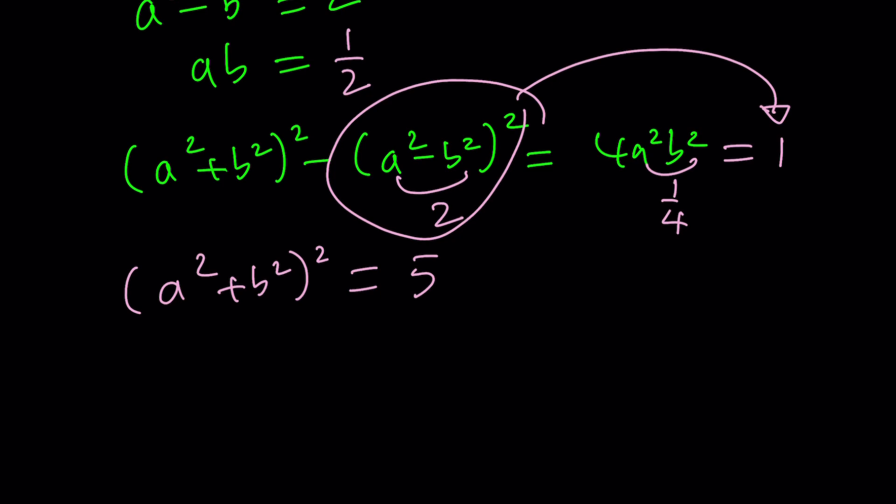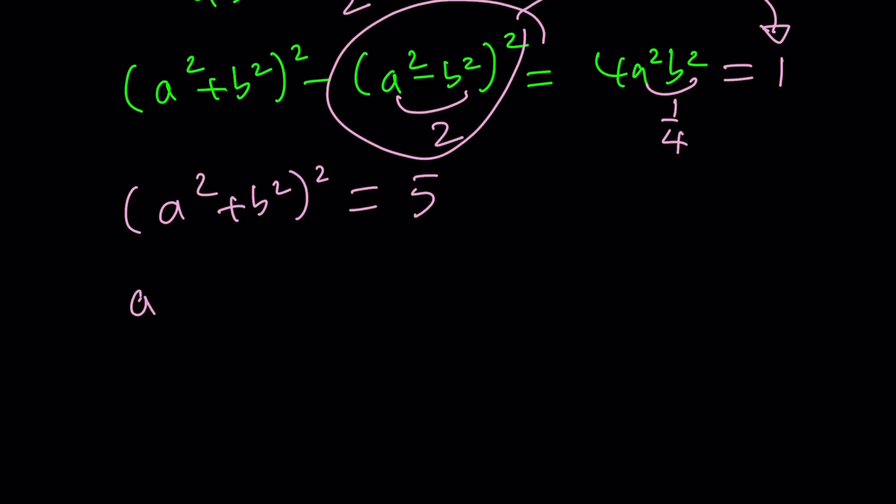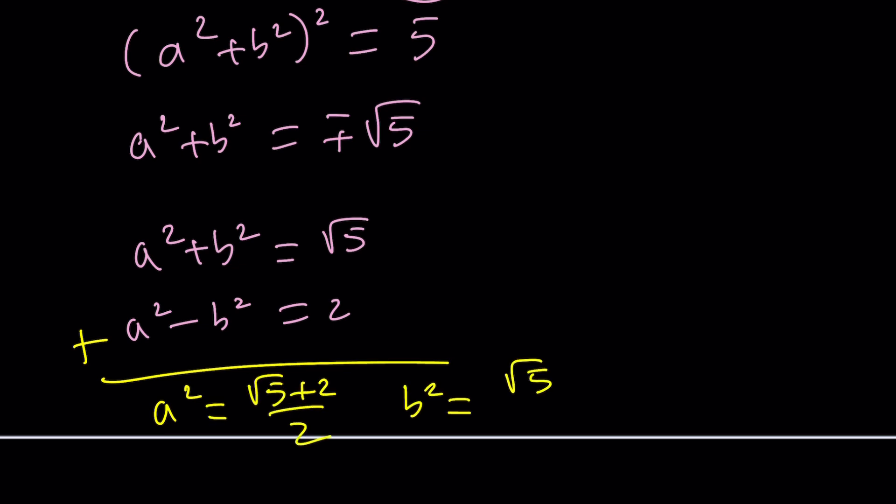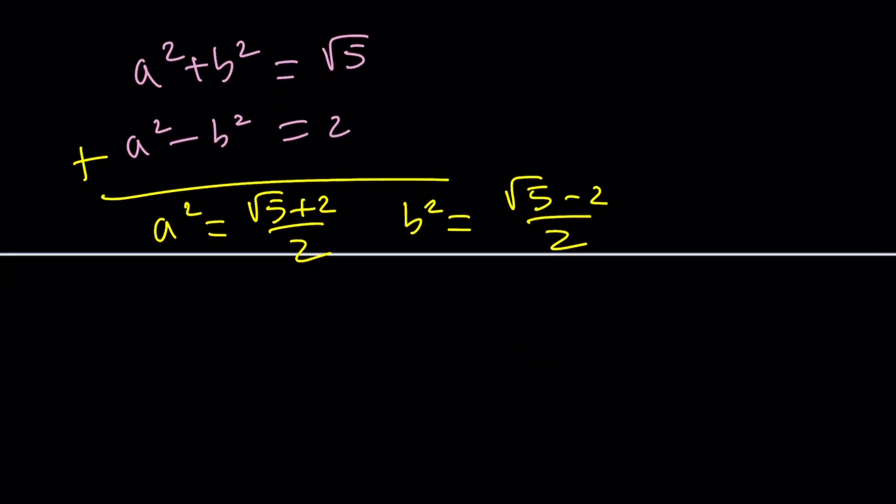And now I know some people are going to be like, why do you show all the steps? Well, people need to see steps. If you don't want to see steps, then close your eyes. From here, we got two solutions. We can safely say that A squared plus B squared equals plus minus root 5. I'm going to take each one at a time. So I also know that A squared minus B squared equals 2. So I'm going to take the positive one first. And then we can add these up. That gives us A squared equals root 5 plus 2 over 2, and B squared equals root 5 minus 2 over 2.